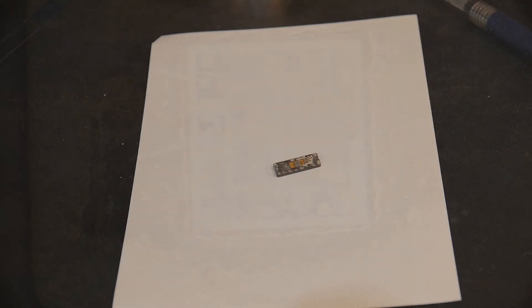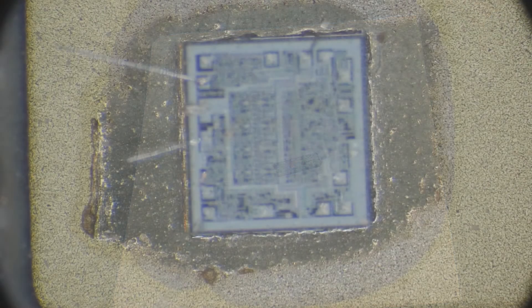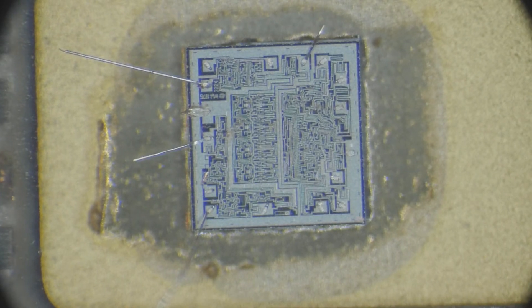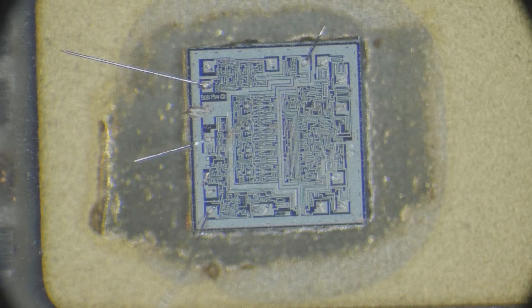So let's put it in the microscope and see what it looks like. Okay, let's see if I can get this in better focus. There we go. Some of the bond wires were ripped off when I popped the package off, but you can see the chip there looks pretty cool.